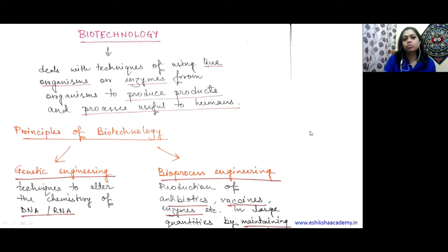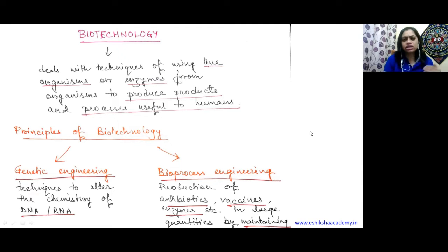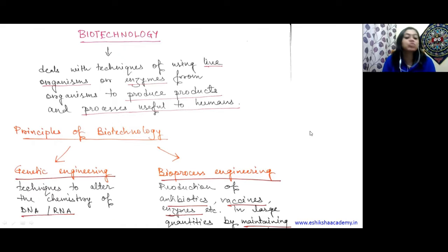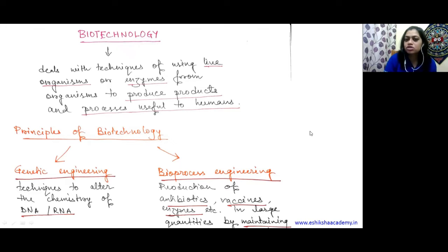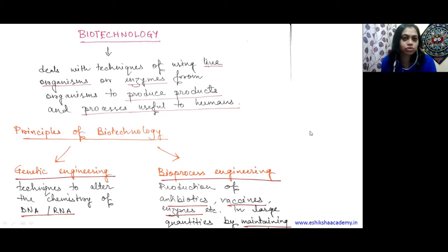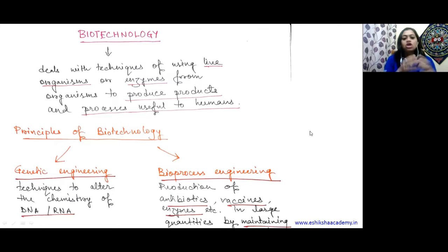When living organisms or their products are combined with techniques, it is called biotechnology. Similarly, making hybrid plants is also biotechnology - traditional techniques can make hybrid plants, and nowadays biotechnology tools are also used to make hybrid plants. All these are different sectors and uses of biotechnology. Remember: living organisms are involved, techniques are involved, and the outcome is something advantageous and helpful for humans.